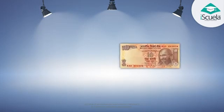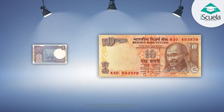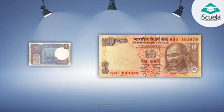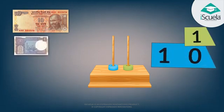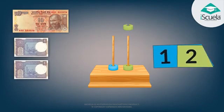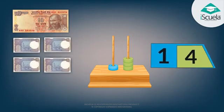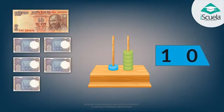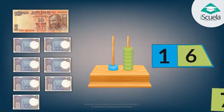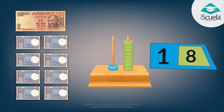Similarly, we will pick up a single ten rupee currency note instead of ten one-rupee notes, because ten ones are equal to one ten. Ten and one — eleven. Ten and two — twelve. Ten and three — thirteen. Ten and four — fourteen. Ten and five — fifteen. Ten and six — sixteen. Ten and seven — seventeen. Ten and eight — eighteen. Ten and nine — nineteen.